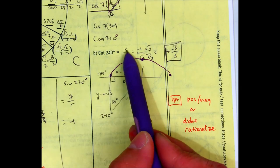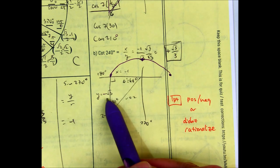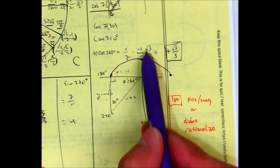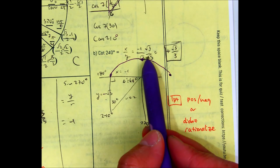Cotangent is x over y, so that would be negative 1 over negative radical 3. Negative divided by negative is a positive. When you rationalize, you'll get radical 3 over 3 is your answer.